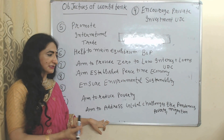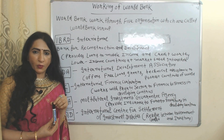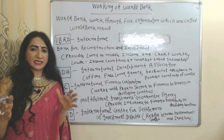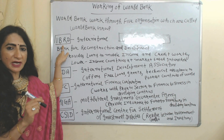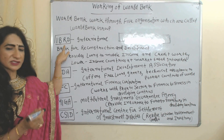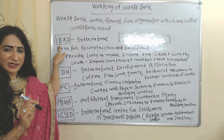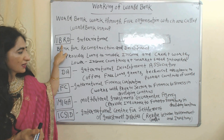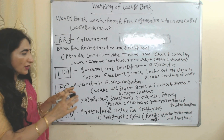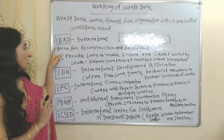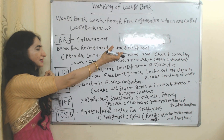Now we talk about the working of the World Bank. World Bank works through five organizations called the World Bank Group. World Bank started with IBRD in 1944 — that's why IBRD is the official name. After that, all these other organizations were established, and currently World Bank works through all five. First is IBRD, which stands for International Bank for Reconstruction and Development, providing loans to middle-income and creditworthy lower-income countries at market-based interest rates.